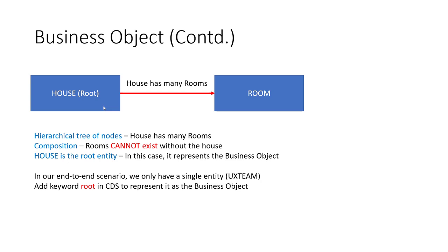A typical example is sales order and sales order items. The sales order is the root entity, and the sales order items are the child entities — they cannot exist without the root node. That's what we mean by composition. One of the entities needs to be marked as root. In this case, house is the root entity, and by marking it as root, this represents our business object.